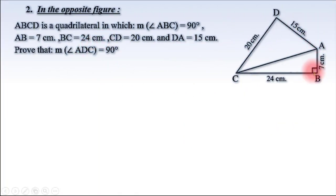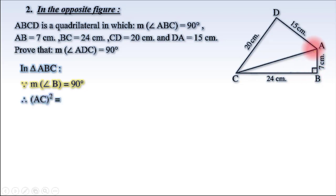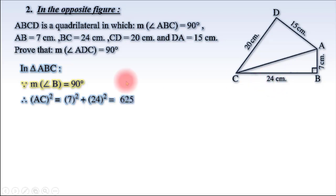Example number 2: ABCD is a quadrilateral in which the measure of angle ABC equals 90 degrees, AB equals 7 cm, BC equals 24 cm, AD equals 15 cm, and DC equals 20 cm. Prove that the measure of angle ADC equals 90 degrees. First, we must find the missing side AC from triangle ABC. Since the measure of angle B equals 90 degrees, AC power 2 equals AB power 2 plus BC power 2, which equals 7 power 2 plus 24 power 2 equals 625. Therefore AC equals the square root of 625 equals 25 cm.